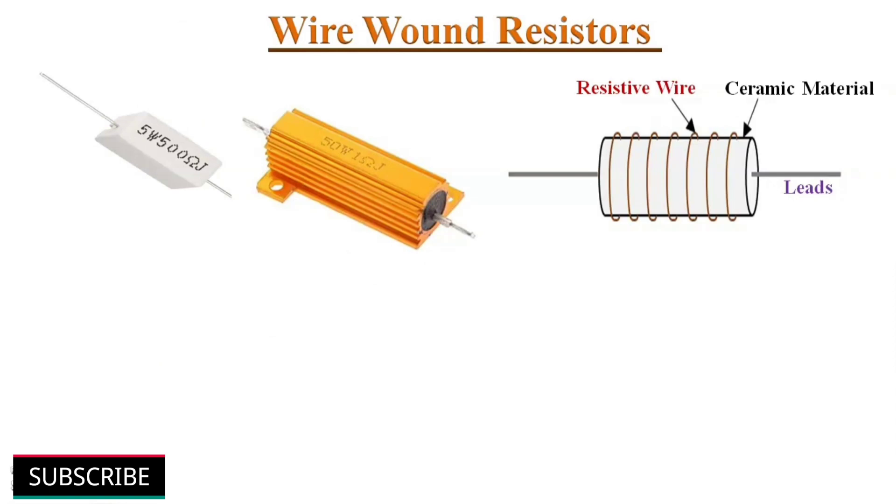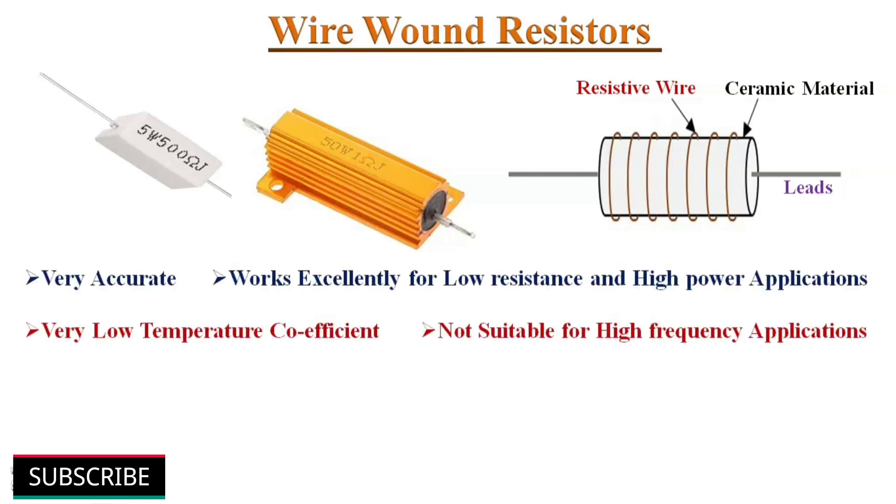Next one, wire wound resistors. These are the oldest type of fixed resistors but are being used even now. These resistors are made by winding a metallic resistive wire around a ceramic core. The thickness of the resistive wire decides the resistance of the wire wound resistor. Generally, tungsten, manganin and nickel are used as a resistive wire, whereas bakelite or ceramic clay material is used as an insulating core. Wire wound resistors are very accurate. They work excellently for low resistance values and high power ratings.